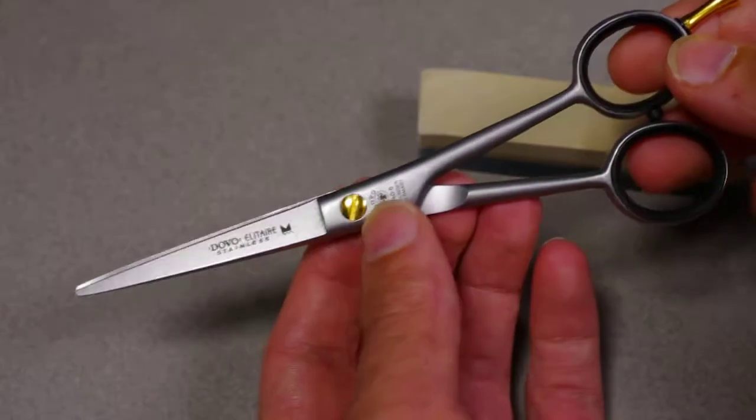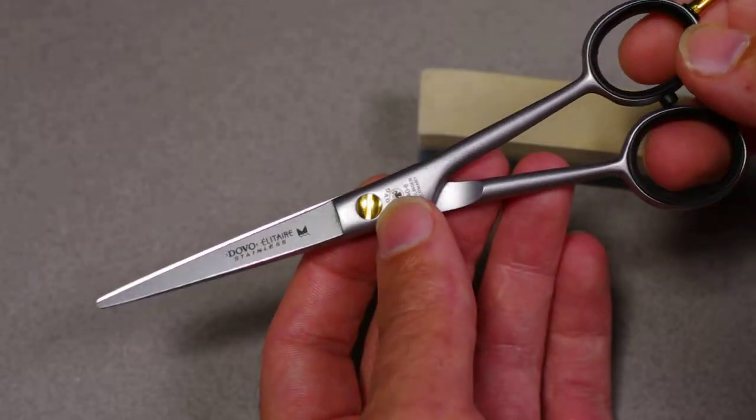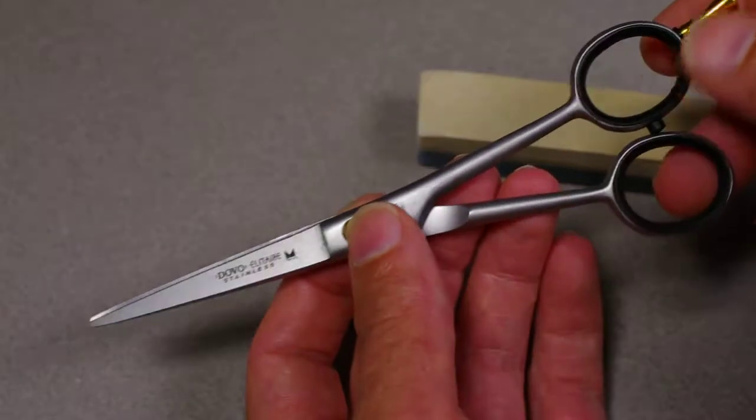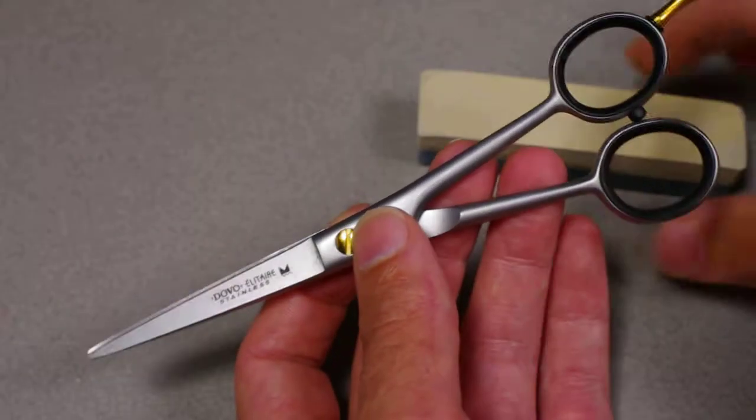This is the Dovo Eliter 6 inch 240606. It's the best selling shear that we have, so we're using this as the example.